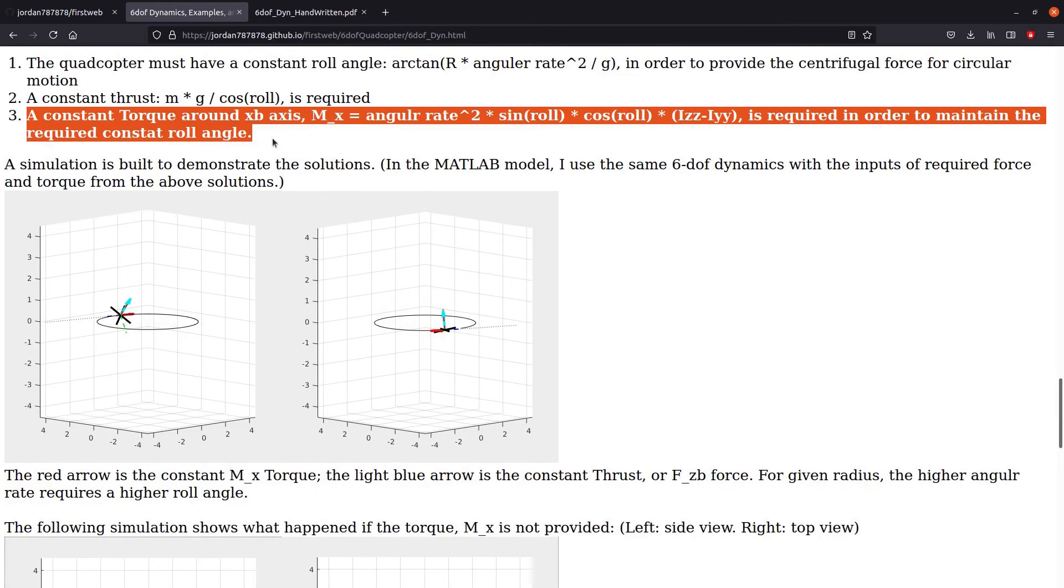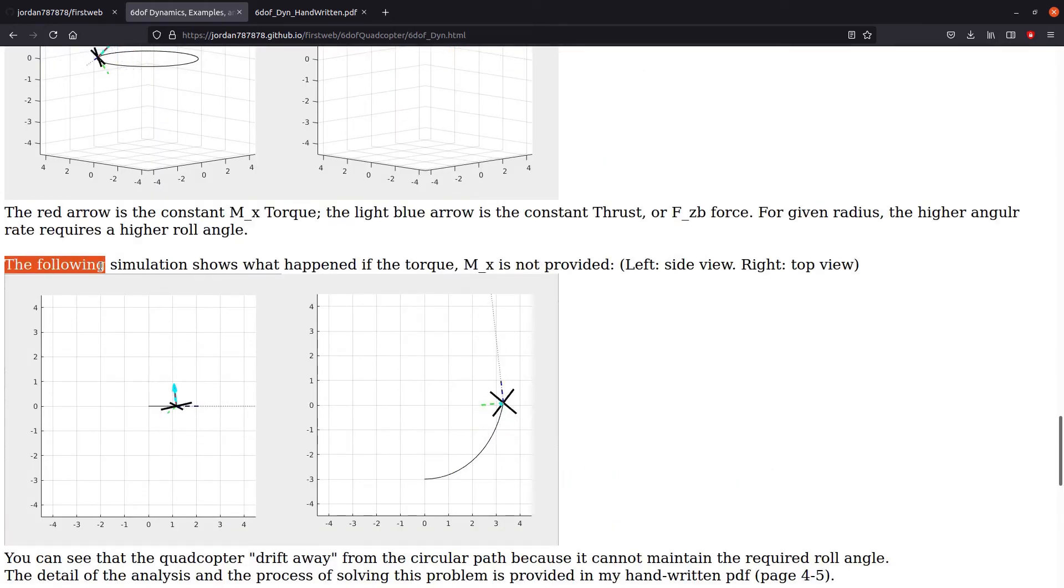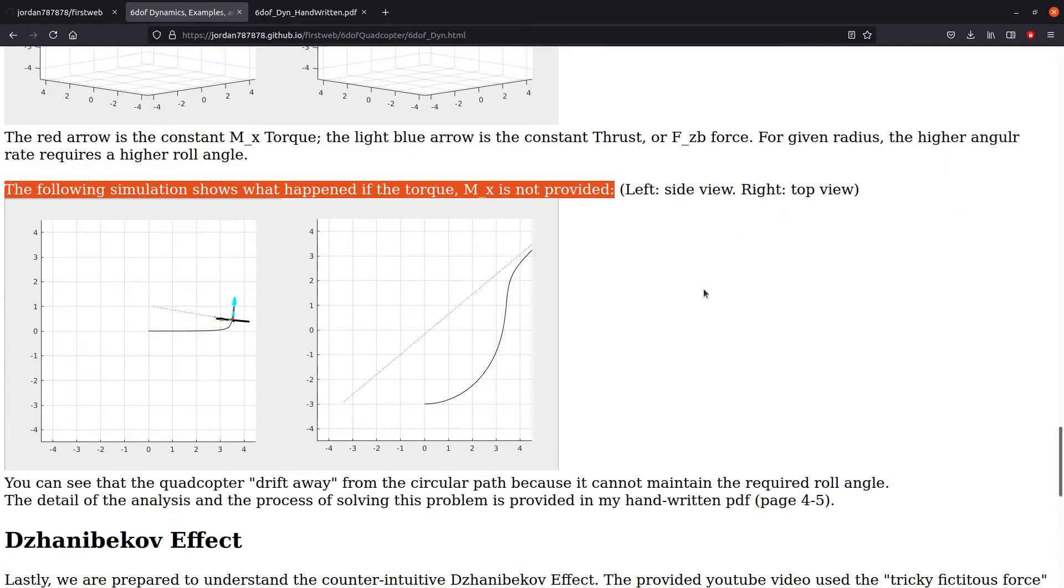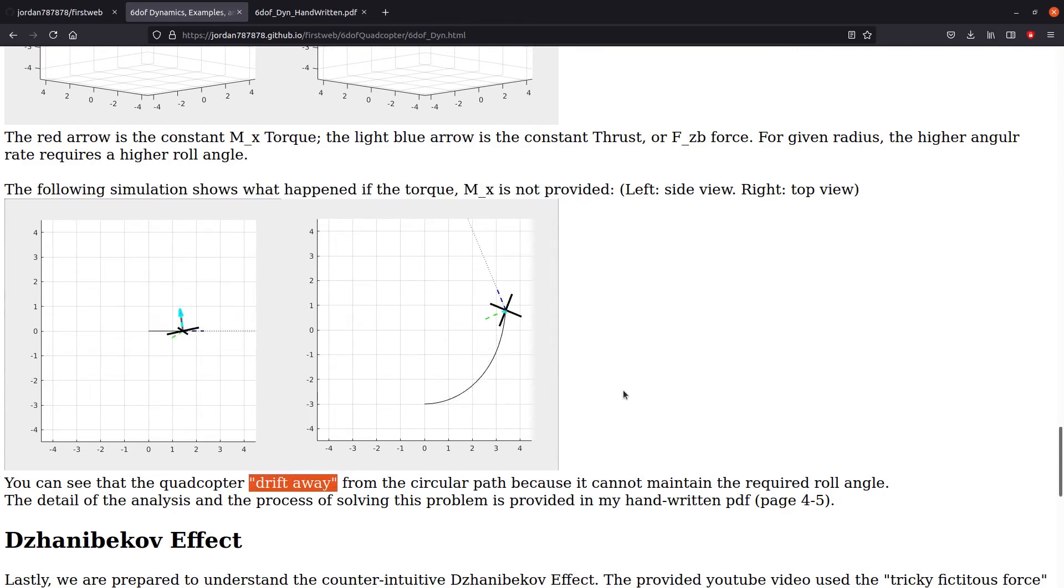Note here, it is interesting that aside from the thrust, the quadcopter must also generate a torque in order to maintain its constant roll angle. But what would happen if we don't provide this torque? The following simulations show that if the vehicle doesn't generate any torque, it would drift away from the constant radius circular path because its roll angle cannot be maintained.